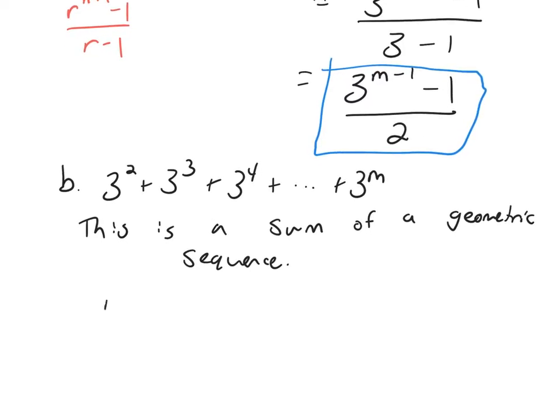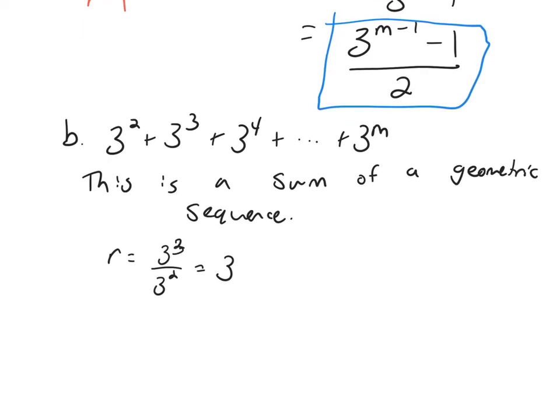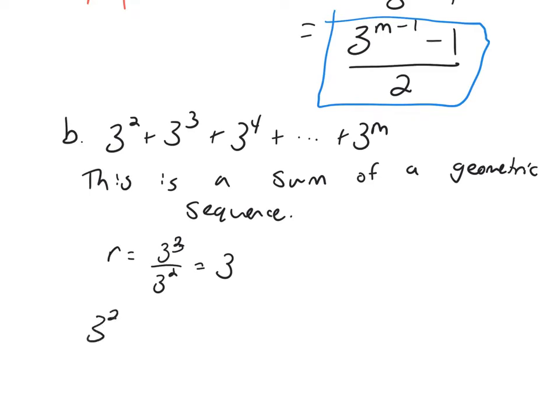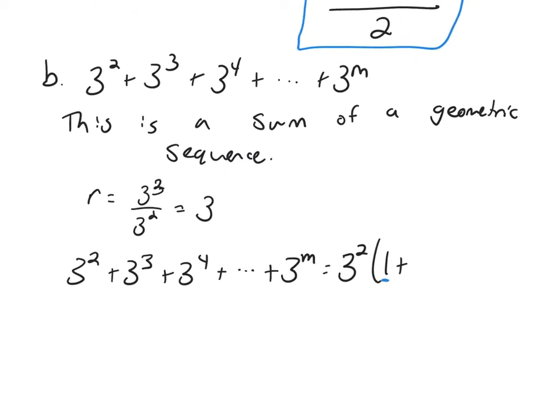My r, if you compute the ratio of any two consecutive terms, you'll get 3. But I've got a little bit of a problem here. If I want to use my formula, the first term needs to be 1, and it's not 1. So I'm going to have to factor out 3 squared out of every term so that my first term then becomes a 1, which is what I need. 1 plus 3 plus 3 squared plus 3 to the m minus 2. You reduce every power by 2.